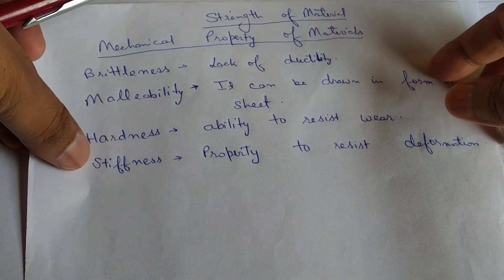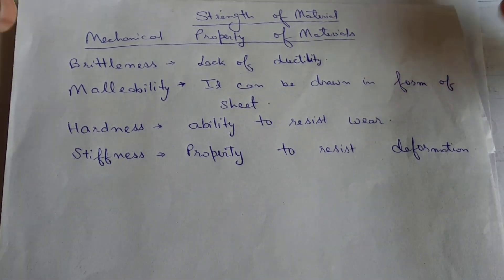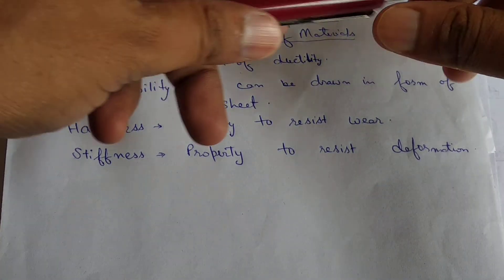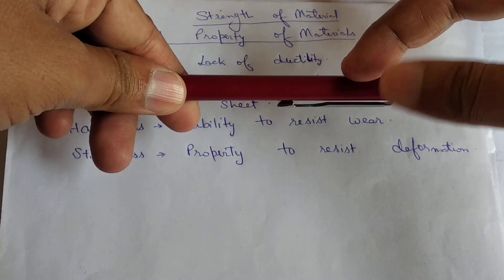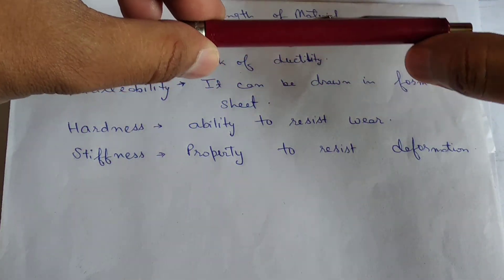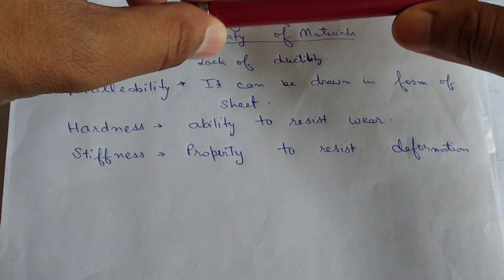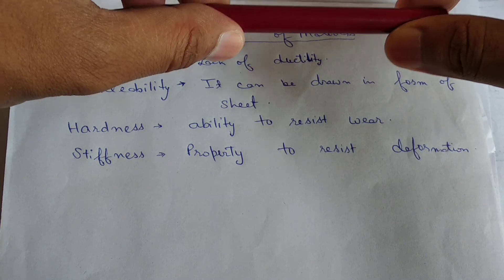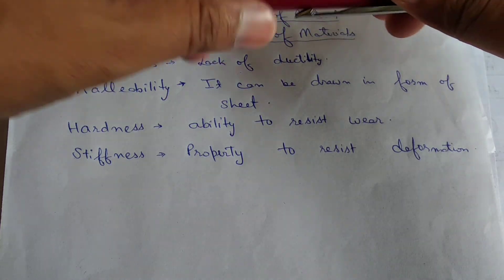And stiffness. What is stiffness? It is the property to resist deformation. If I apply force on the object, the resistance of the property resists the deformation. That property is known as stiffness.